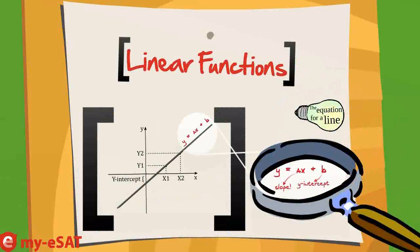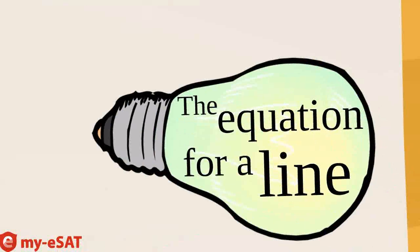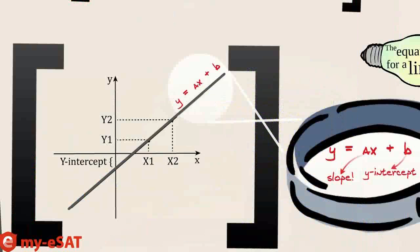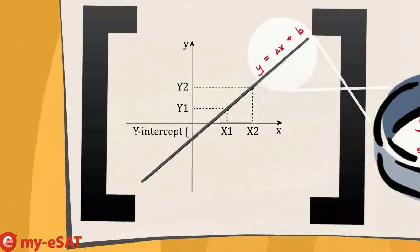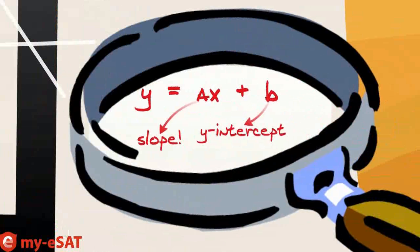How do functions function? A linear function is the equation for a straight line. How a bunch of numbers and letters can represent a line? But it's true. Every line on a graph, even the one on the board, has a unique equation. The standard form which we write the function of a line is y equals ax plus b.